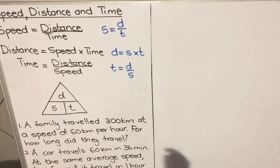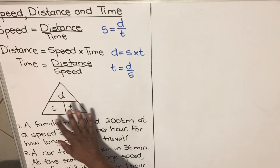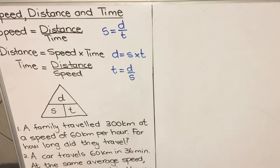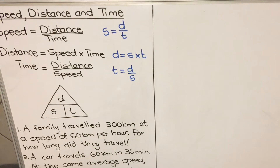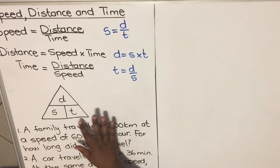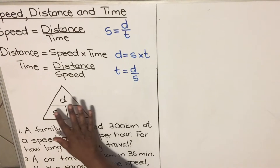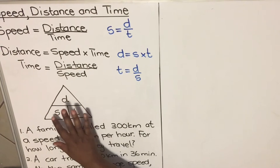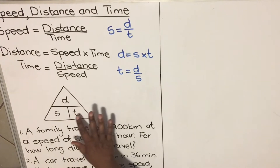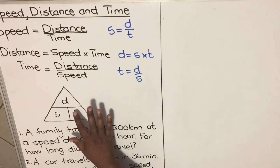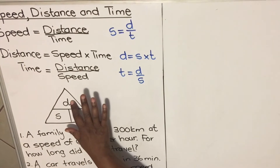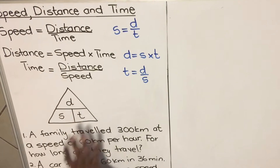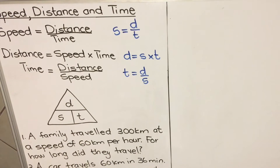Now we have this triangle that you can use to remember these formulas, if you can't memorize them. You draw the triangle, draw a line across the middle, and in the bottom you have two boxes. On top you write d for distance, and then speed and time at the bottom — it doesn't matter which order you put them.